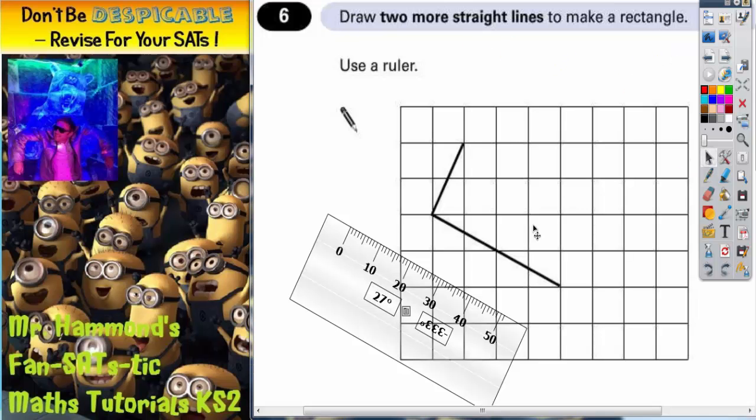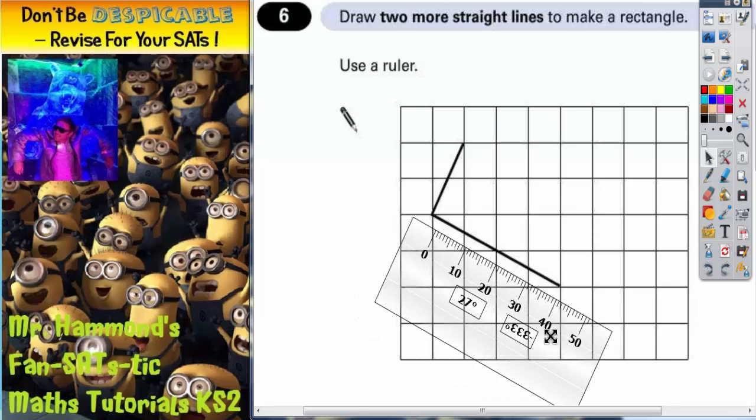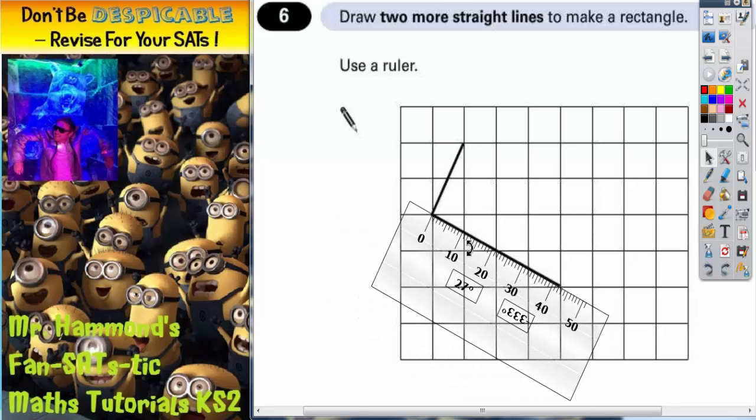Now the first thing we need to do is get hold of our ruler. Let's put it level with the longest side here of the rectangle. Now what we do know is the opposite side to this is going to be parallel to this side because a rectangle has a pair of long parallel sides.